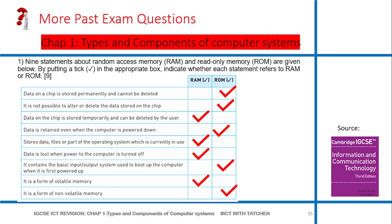Stores data files or part of the operating system which is currently in use - that's the RAM. Data is lost when the power to the computer is turned off - RAM. It contains the basic input output system - that should be the ROM, which is part of the boot up of the computer. It is a form of volatile memory - RAM. Volatile means it's not permanent. RAM is the volatile memory and non-volatile is ROM, meaning it's permanent.